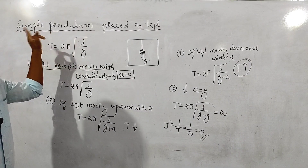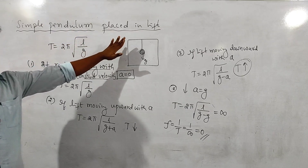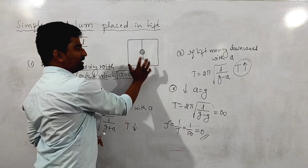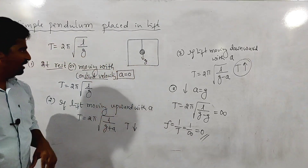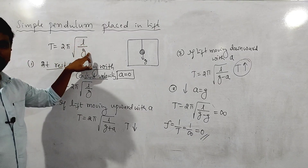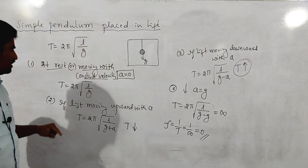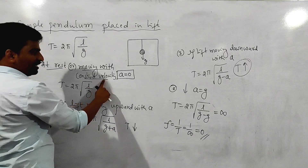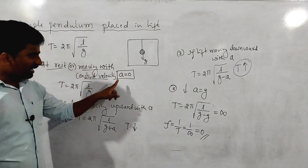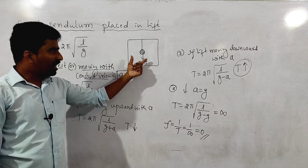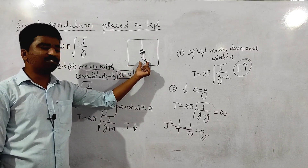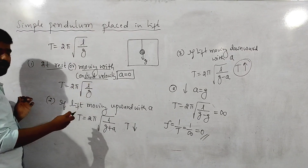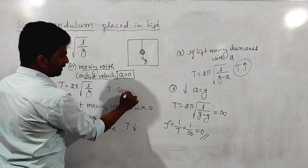A very important concept from the chapter oscillation: a simple pendulum placed in a lift. Angular acceleration acts downward — that is, acceleration due to gravity. So T = 2π√(L/G). First case: if the lift is at rest or moving with constant velocity, acceleration is zero, so G_eff = G, and the time period T = 2π√(L/G) remains the same.